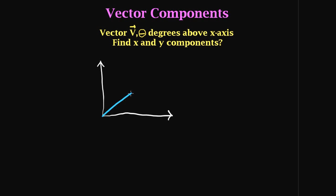Here's vector V above the x-axis at theta degrees. This is the y-axis and this is the x-axis. Using your natural logic, what would we mean by x and y components? Well, some portion of this vector can be described in the x direction, and some portion in the y direction. This vector has a magnitude in the x direction and a magnitude in the y direction. Together, these two component vectors make up the original vector V.